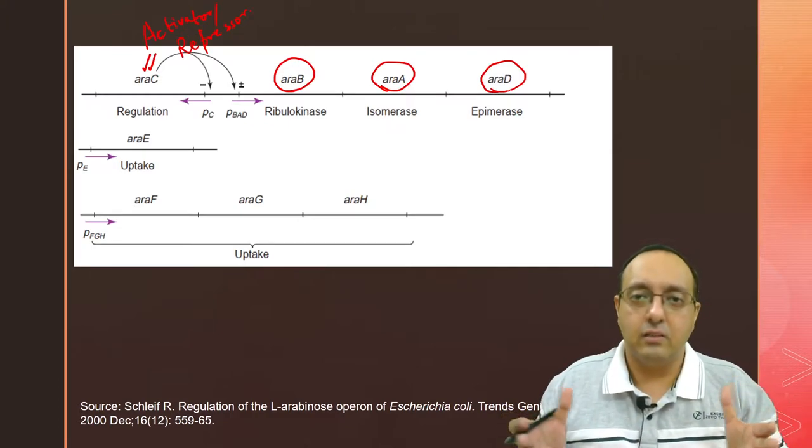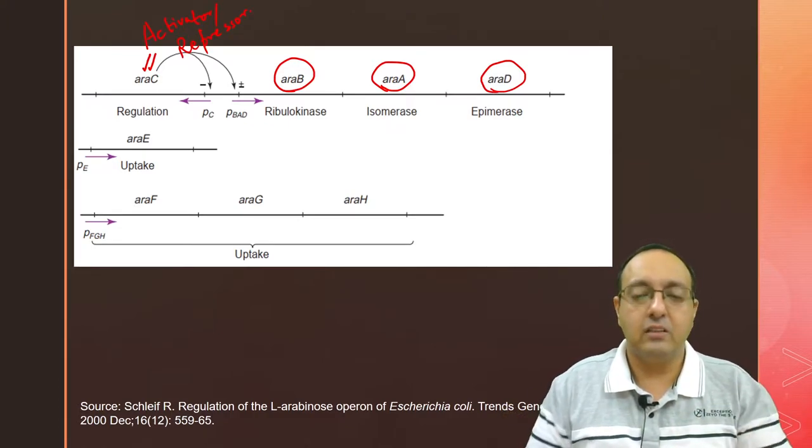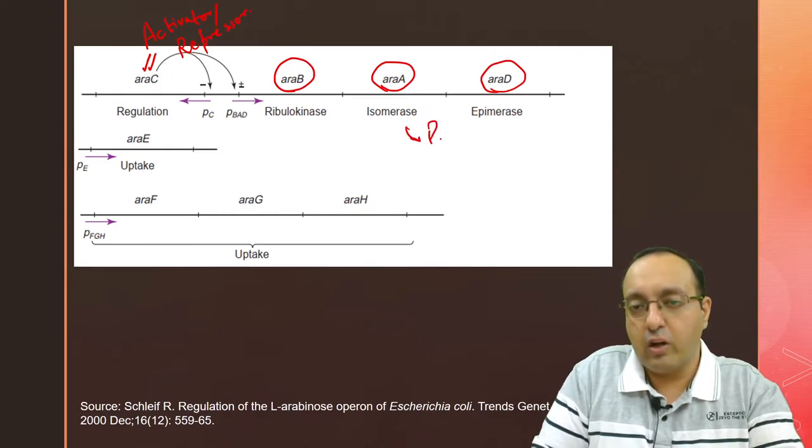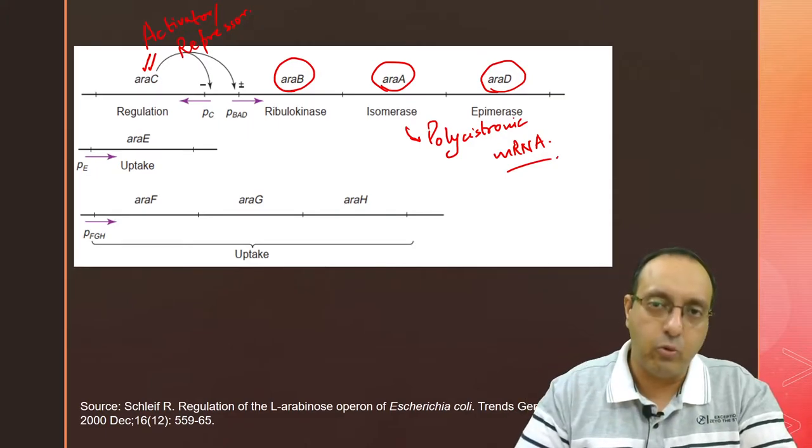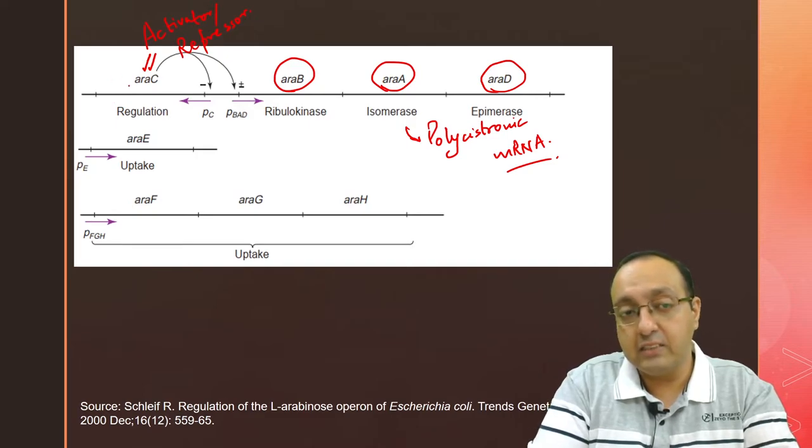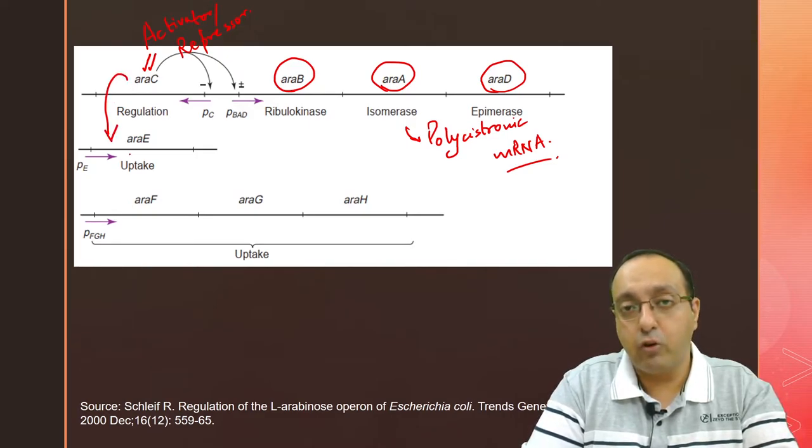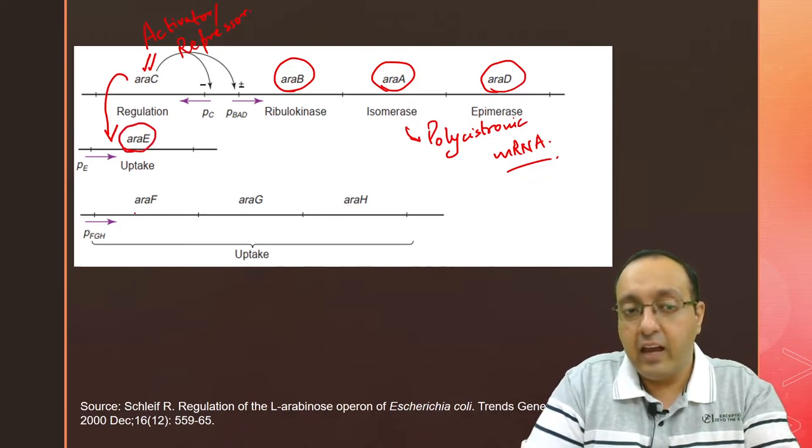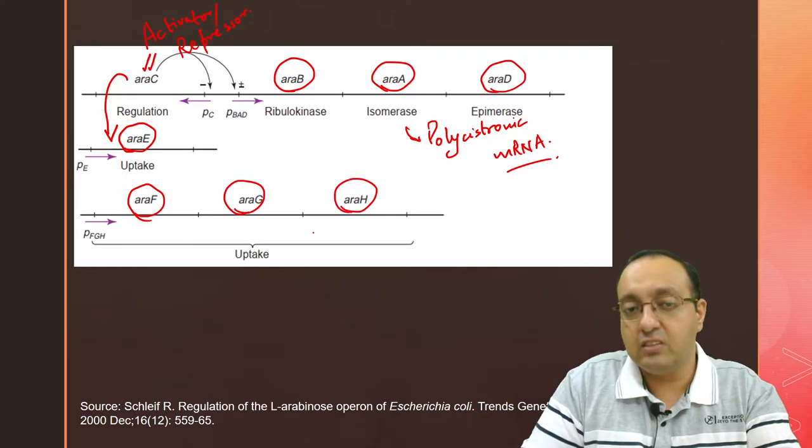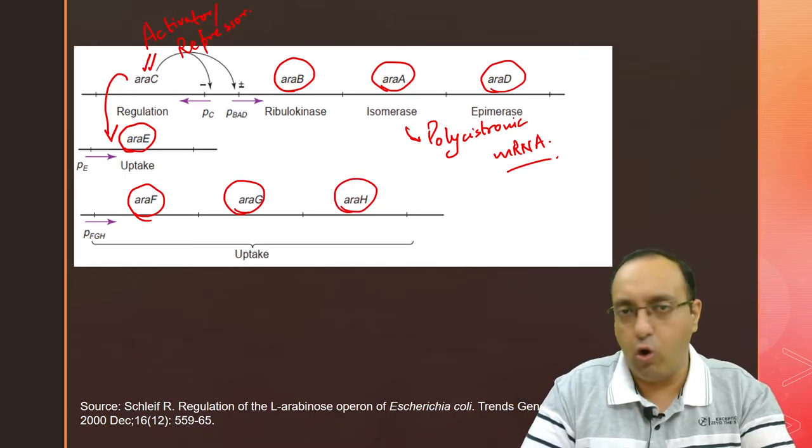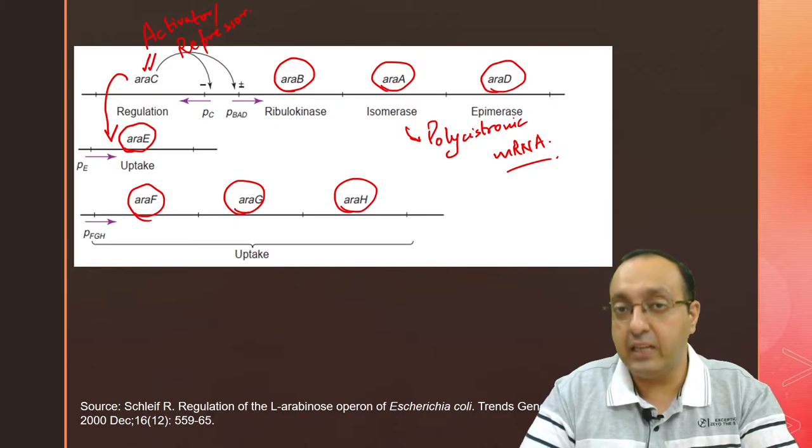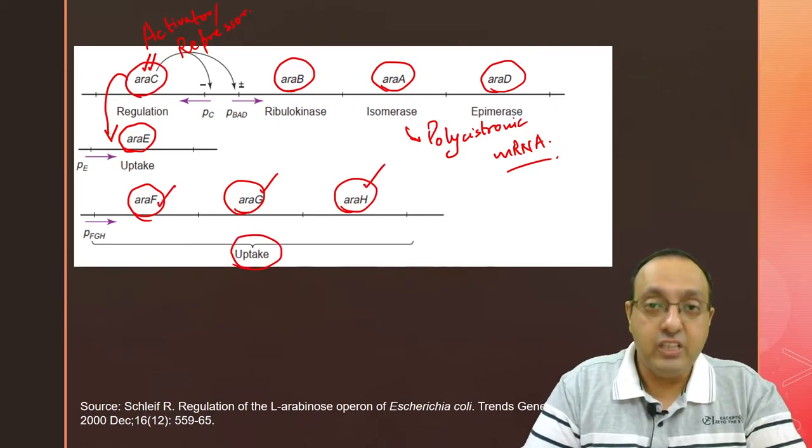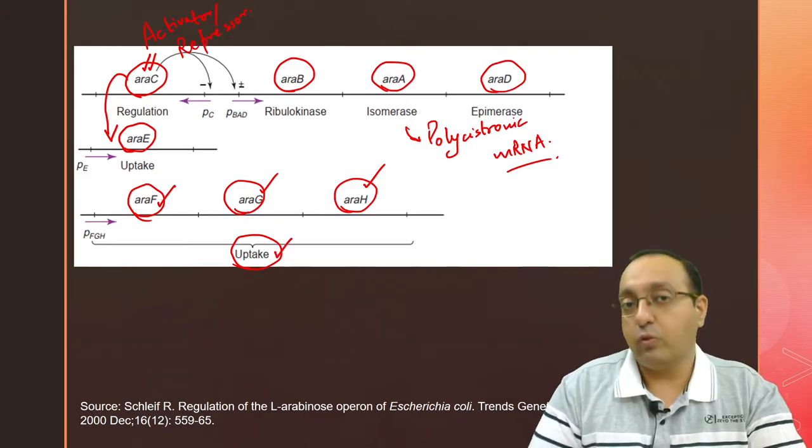These are three contiguous genes linked together which give rise to a polycistronic mRNA, one mRNA which contains the coding information for all three genes. AraC also regulates the promoters responsible for turning on expression of araE gene as well as araF, G, and H genes. These genes are located elsewhere in the bacterial genome, far away, not contiguous with the araBAD genes. The proteins encoded by araFGH are involved in uptake of arabinose from the outer environment.